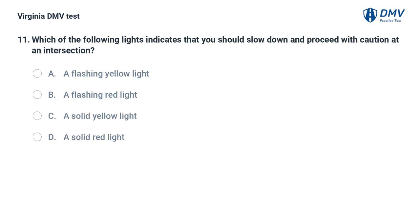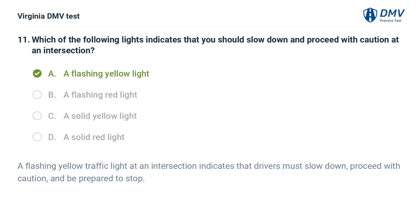Which of the following lights indicates that you should slow down and proceed with caution at an intersection? A. A flashing yellow light, B. A flashing red light, C. A solid yellow light, D. A solid red light. The correct answer is A: A flashing yellow light. A flashing yellow traffic light at an intersection indicates that drivers must slow down, proceed with caution, and be prepared to stop.